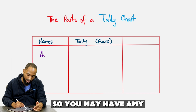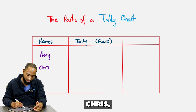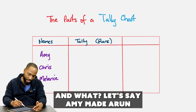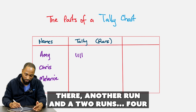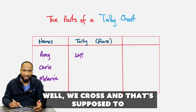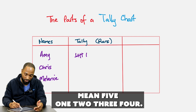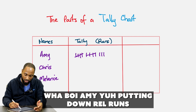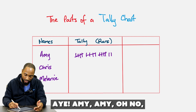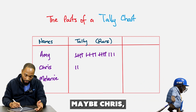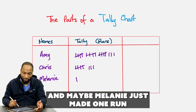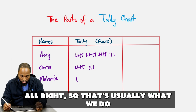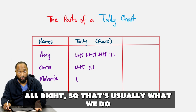So you may have Amy, Chris, and Melanie all on this side. Let's say Amy made a run, then another run, and two more runs — four. Then we cross, and that's supposed to mean five. Chris maybe managed a few, and Melanie just made one run. That's usually what we do in tally charts.